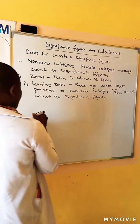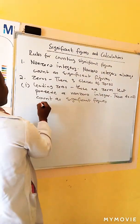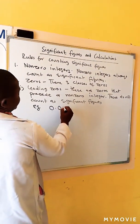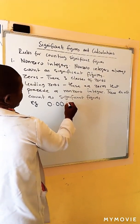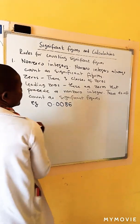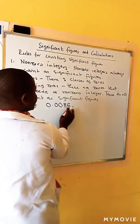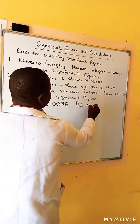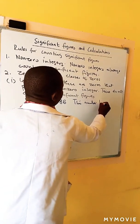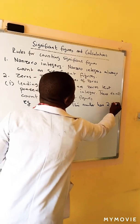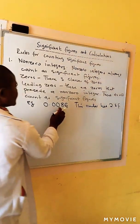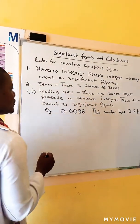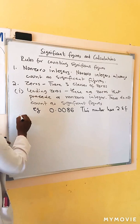For example, the number 0.0086. This number has only two significant figures. The three zeros only show the position of the decimal point.